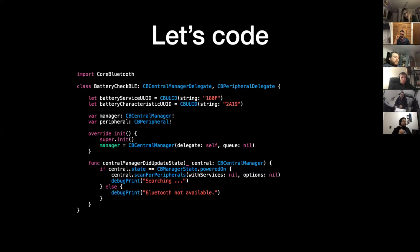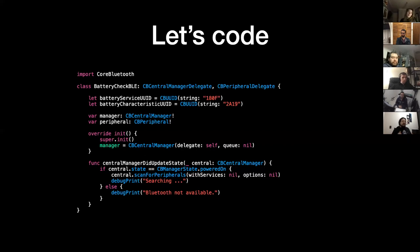The centralManagerDidUpdateState is one of those delegate methods that will be triggered as soon as I start my manager for scanning. In that delegate, I'm checking if my Bluetooth is on on my device, or if I have the right permission to run — since iOS 11, if I'm not mistaken, you need permission from iOS to run Bluetooth connections. As soon as I get that and know I have the go-ahead from the OS, I can start scanning for peripherals.